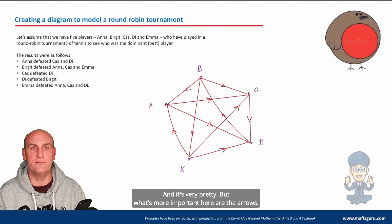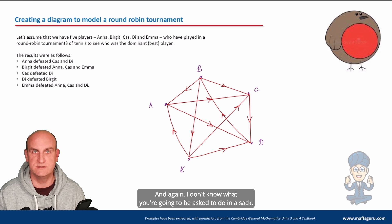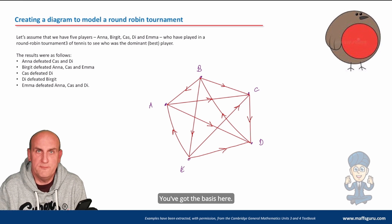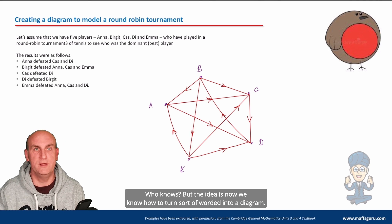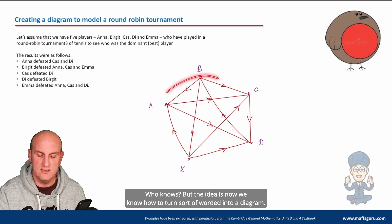Right, there we go. Now obviously when I did this today with my group, one of my boys turned around and went 'Oh, it's a star.' Okay, yes, it's a star and it's very pretty. But what's more important here are the arrows. I don't know what you're going to be asked to do in a SAC - who knows. Could I ask you to draw one of these? Why not. Will they give you one of these and ask you to interpret it? Who knows. But the idea is now we know how to turn worded information into a diagram.